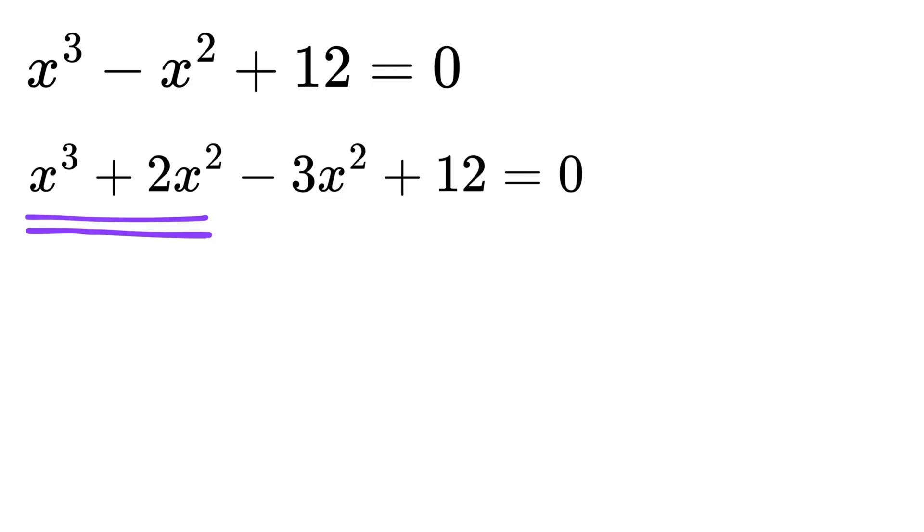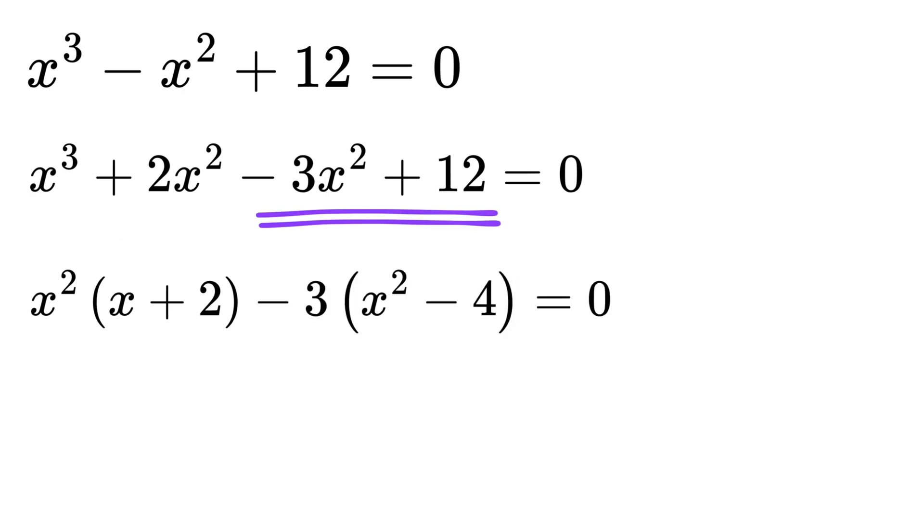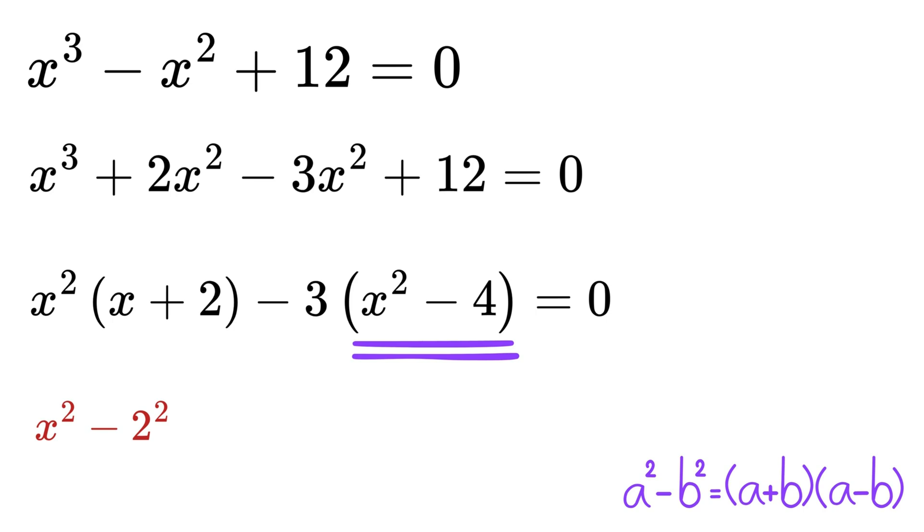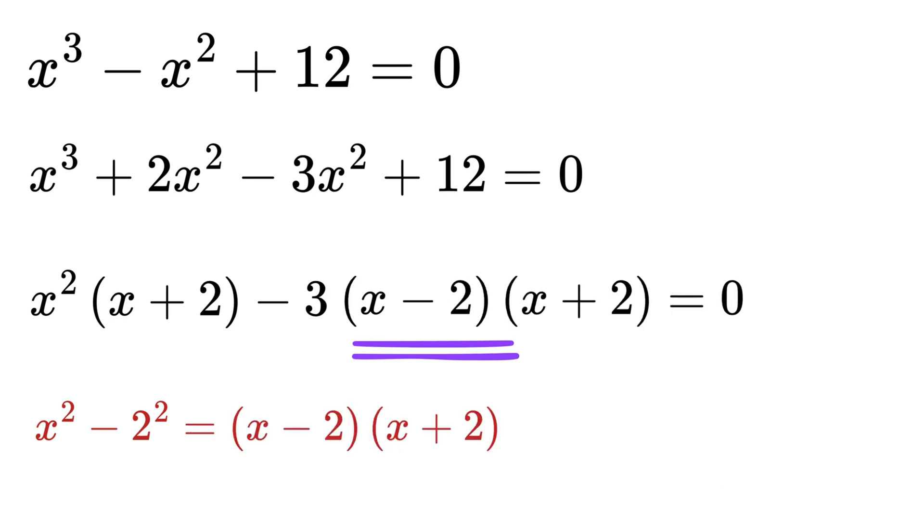Now, take x squared as common from this to get x squared times this will become x plus 2, and from the next part, take minus 3 as common to get minus 3 times x squared minus 4. Next, this x squared minus 4 can be written as x squared minus 2 squared, which is of the form a squared minus b squared, which is equal to a plus b times a minus b, and hence, it can be written as x minus 2 times x plus 2. So far, so good.